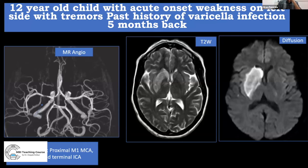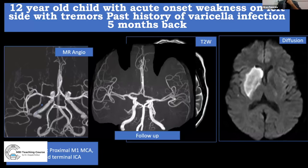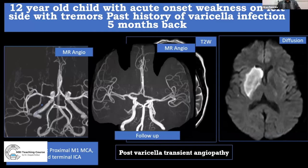When a child presents with recent fever or past viral infection such as varicella and sudden onset stroke-like symptoms, imaging may show infarct in the right caudate nucleus and putamen with narrowing of the right MCA on MR angiogram — suggesting transient cerebral arteriopathy. To definitively label it as such, follow-up imaging is essential. In this case, follow-up after six months showed the vessels had normalized with no new areas of infarct — confirming post-varicella transient angiopathy.